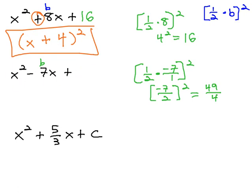This means for this trinomial to be a perfect square, the number at the end that's added needs to be 49 over 4. We can now factor that to something squared.